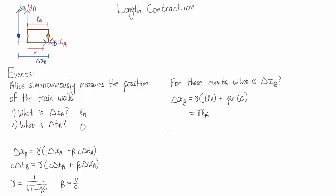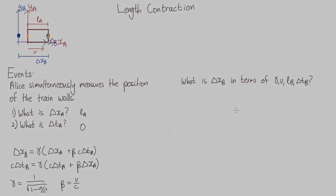So we're going to have to bust out some algebra. So let's say the length of the train is lb in Bob's frame. In terms of gamma, v, lb, and delta tb, what is delta xb?